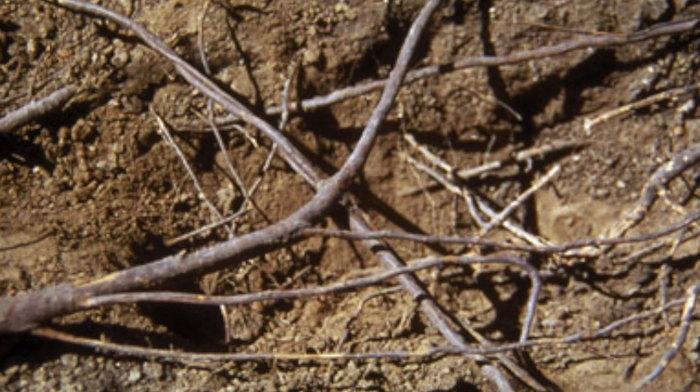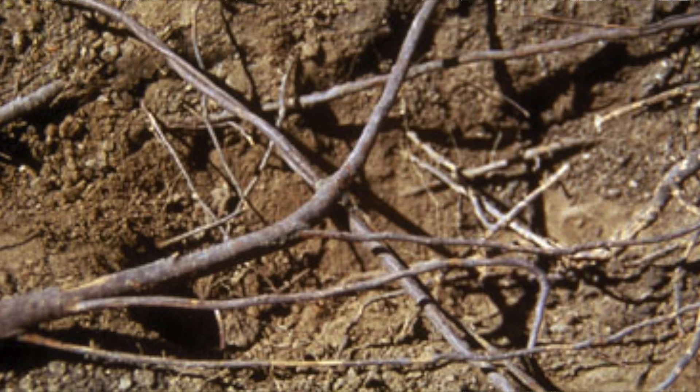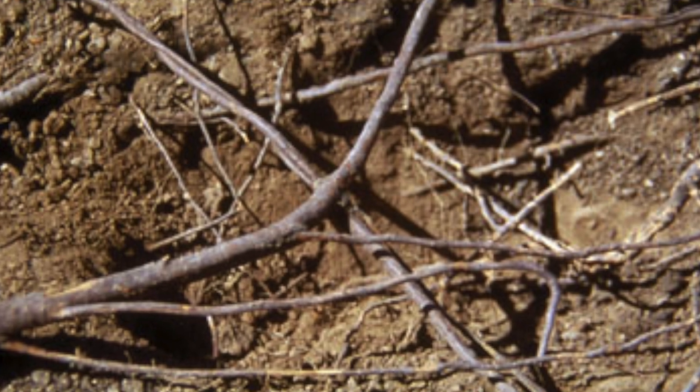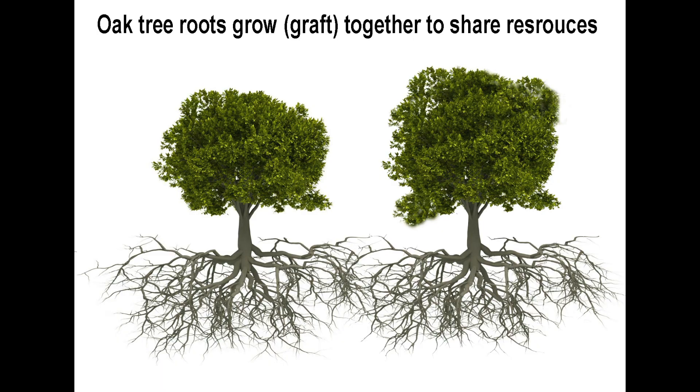How does oak wilt spread? Oak wilt spreads in two ways: below ground and above ground. Below ground, oak wilt spreads through root grafts. Root grafts occur when two oak trees are growing in close proximity and the roots grow together. This happens so that the oak trees can share nutrients and water between them.